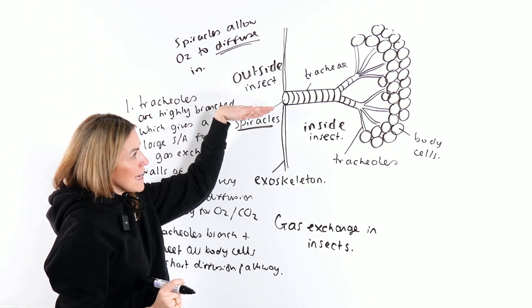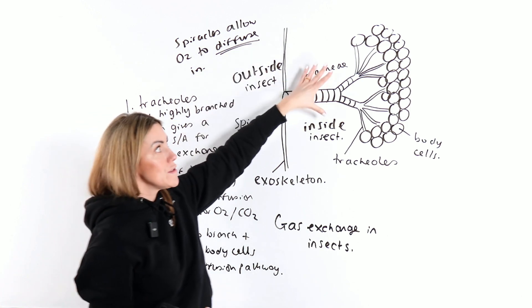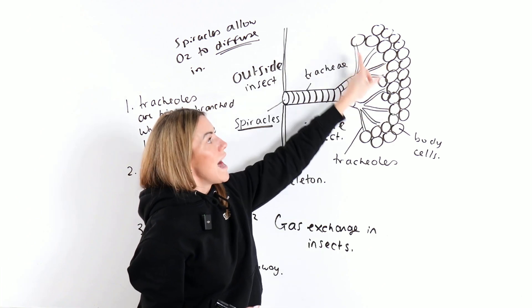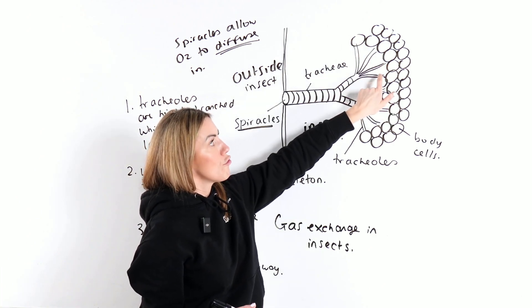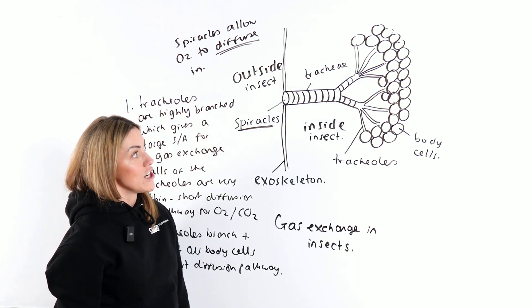It diffuses in through the spiracles, then it diffuses through the tracheae and tracheoles, and then the oxygen will diffuse across through the wall of the tracheoles and into the body cells where it's going to be used for respiration.